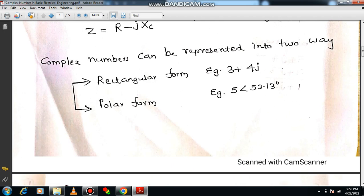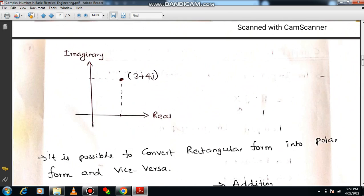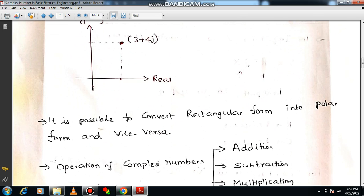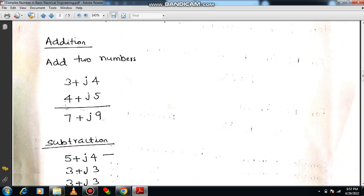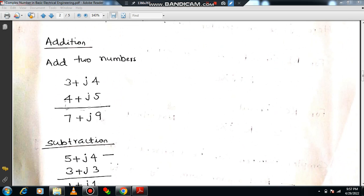For example, 3 plus 4J is in rectangular form where 5 angle 53.13 is in polar form. So 3 will be X axis and whatever the distance which is applicable for Y axis is 4. Thereby we can write 3 plus 4J. Definitely you can convert rectangular into polar and vice versa. Let us come to our point which is required for electrical engineering. You need to know the different operations of complex numbers such as addition, subtraction, multiplication and division. In addition, you can add the real part first, then add the imaginary part. Look at the example.